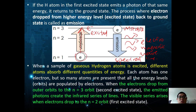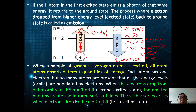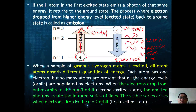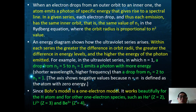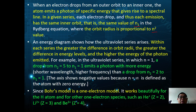When a sample of gaseous hydrogen atoms is excited, different atoms absorb different quantities of energy. Each atom has one electron, but so many atoms are present that all energy levels are populated. Electrons dropping from the third orbit to the first orbit emit photons in the ultraviolet region. The visible Balmer series arises when electrons fall to n = 2. When electrons drop from an outer orbit to an inner one, the atom emits a photon of specific energy giving rise to a spectral line — each series shares the same inner orbit value, with the orbit radius proportional to n².